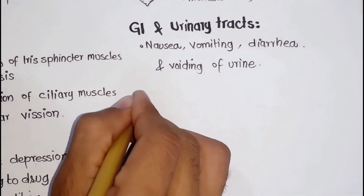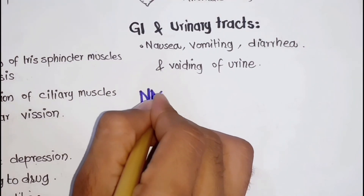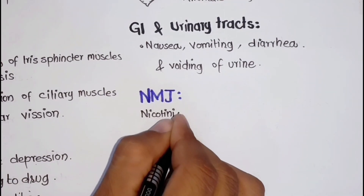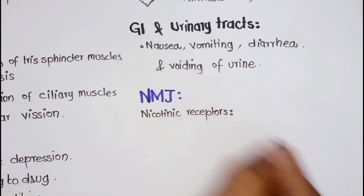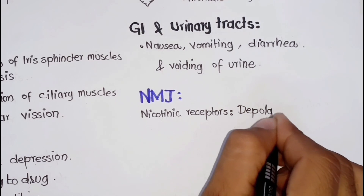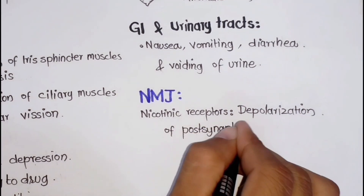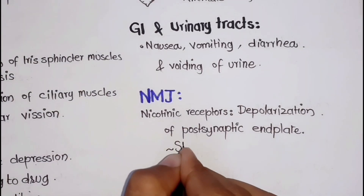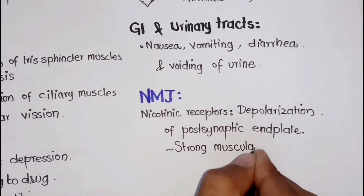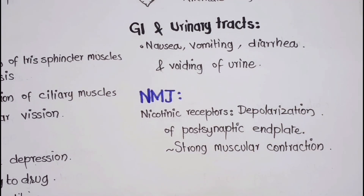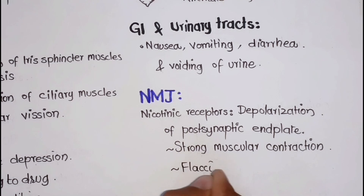Another site of cholinomimetic drug action is neuromuscular junctions. The nicotinic receptors are involved and upon stimulation cause immediate depolarization of the post-synaptic end plate, resulting in strong muscular contraction. Similarly, prolonged exposure causes depolarizing blockade leading to flaccid paralysis in the case of skeletal muscles.